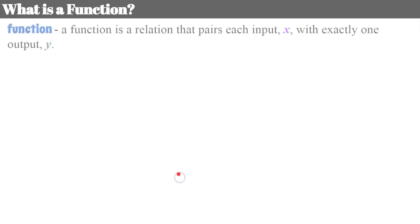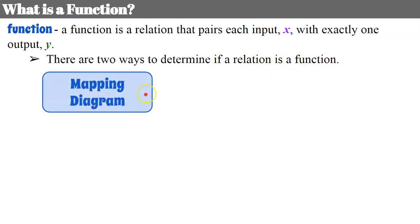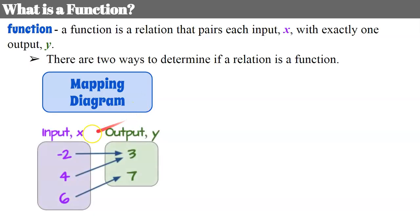Now let's talk about functions. What is a function? A function is a relation that pairs each input X with exactly one output Y. There are two ways to determine if a relation is a function. We can use a mapping diagram — we want to look to see that each input maps with exactly one output. So negative 2 only maps to 3, 4 only maps to 3, and 6 only maps to 7. This is a function because each input maps to exactly one output.